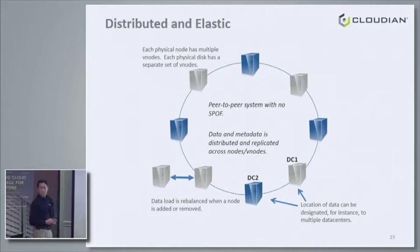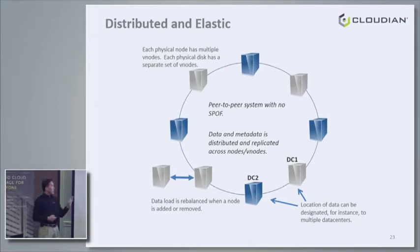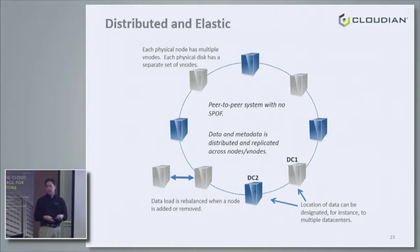Question: You've drawn it as a ring — is there any reason you've specifically shown it that way? Answer: We'll talk about how we do this, but how we initially distribute the data is based on a consistent hashing mechanism where we take a hash of the bucket plus object key to get a token, and then decide on the distribution of the data.